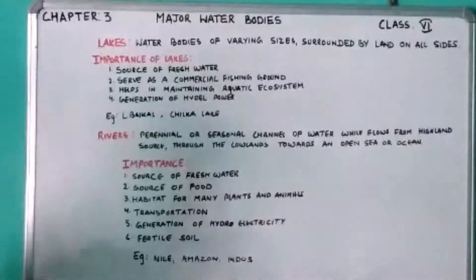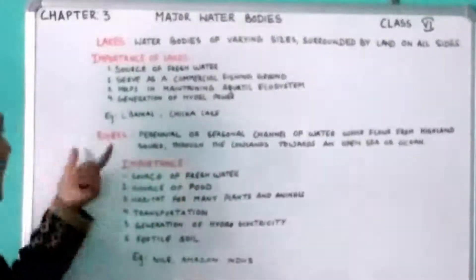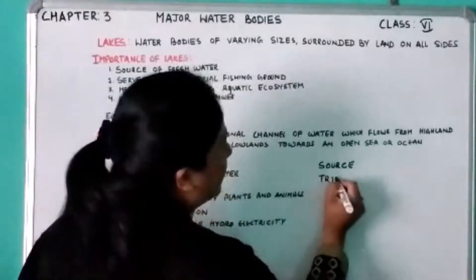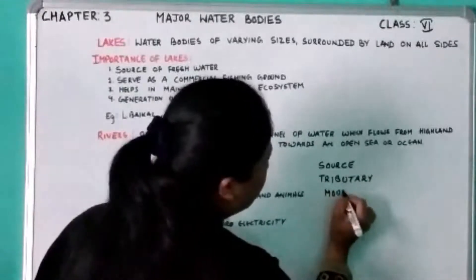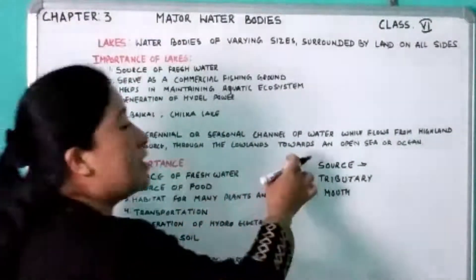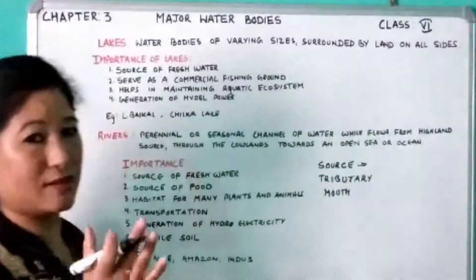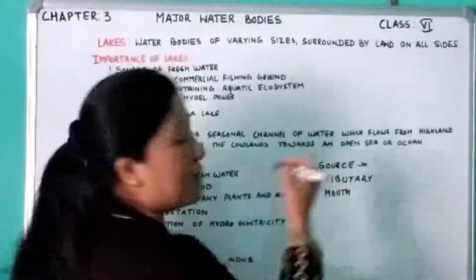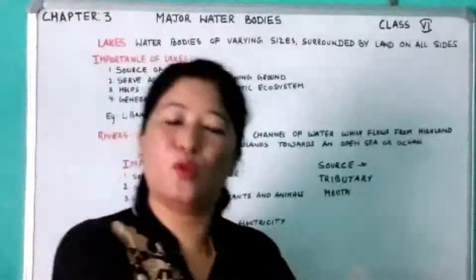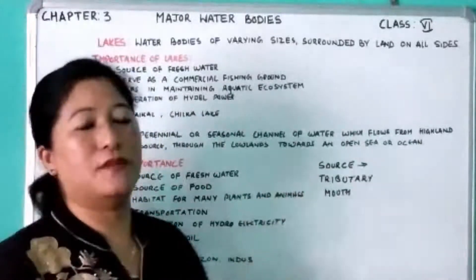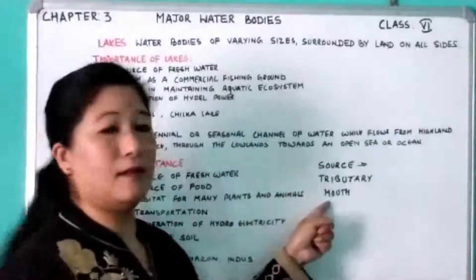There are three important points to remember about a river. First: the source — the point where the river originates, which is in the highlands or mountains. Second: the tributary — a smaller stream that joins a larger stream. Third: the mouth — the point where the river water joins the open sea, lake, or ocean. Please remember: source, tributary, and mouth of the river.